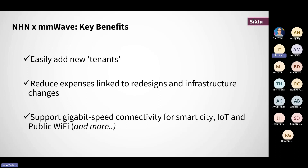We've recently released our TerraGraph portfolio in conjunction with the support of Meta/Facebook. What we are suggesting is that you start deploying our 60 gigahertz mesh point-to-multipoint products to build redundant networks outside of your current network reach to connect operators' small cell technology. First and foremost, it's an easy way to add new tenants outside of the services you're already selling. With the densification of small cell infrastructure required to provide ubiquitous coverage, it means there are multiple tenants for you to connect. By building these redundant networks, you reduce expenses linked to redesign and infrastructure changes, and you can support smart city services, IoT devices, public Wi-Fi, and many more.